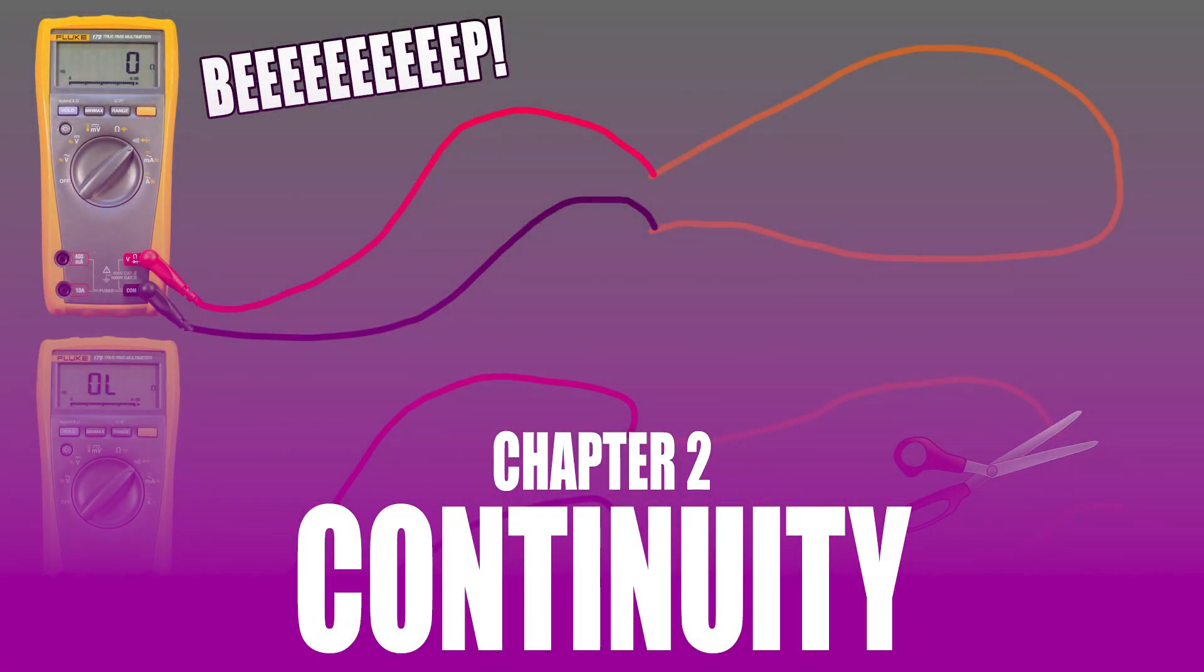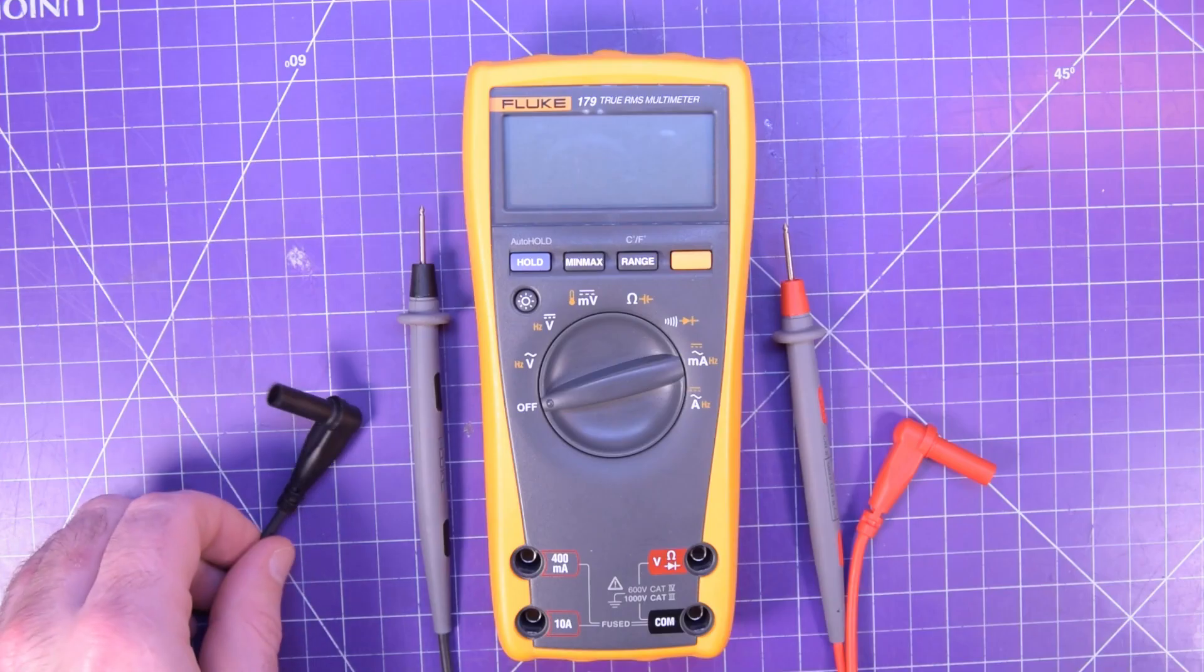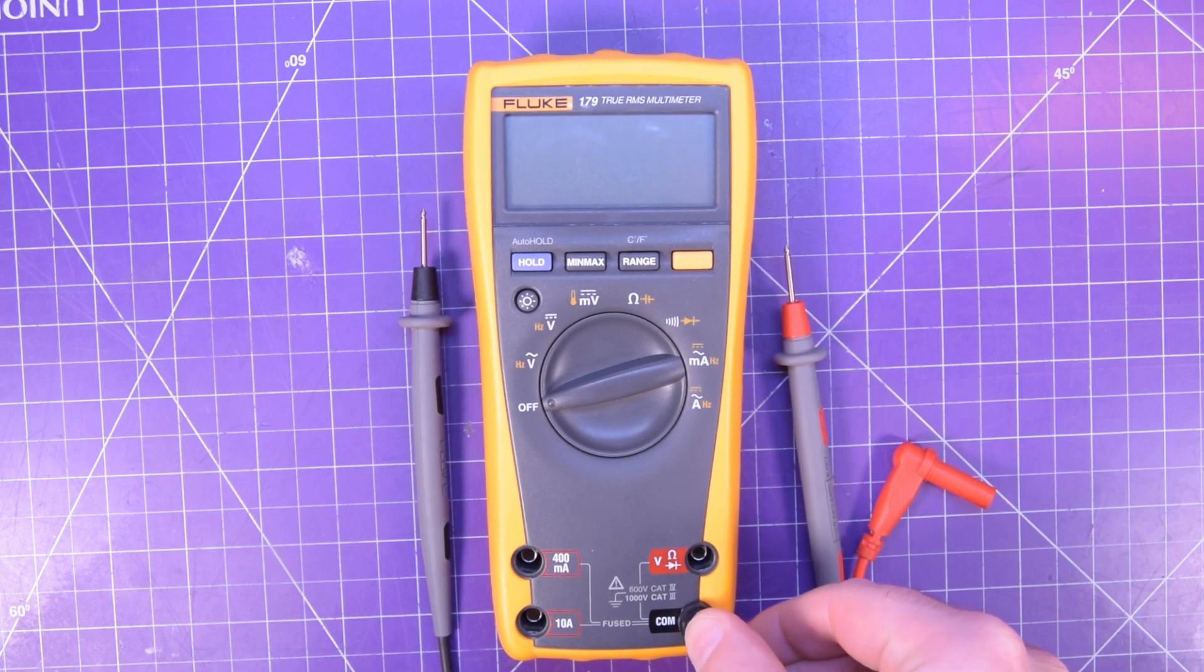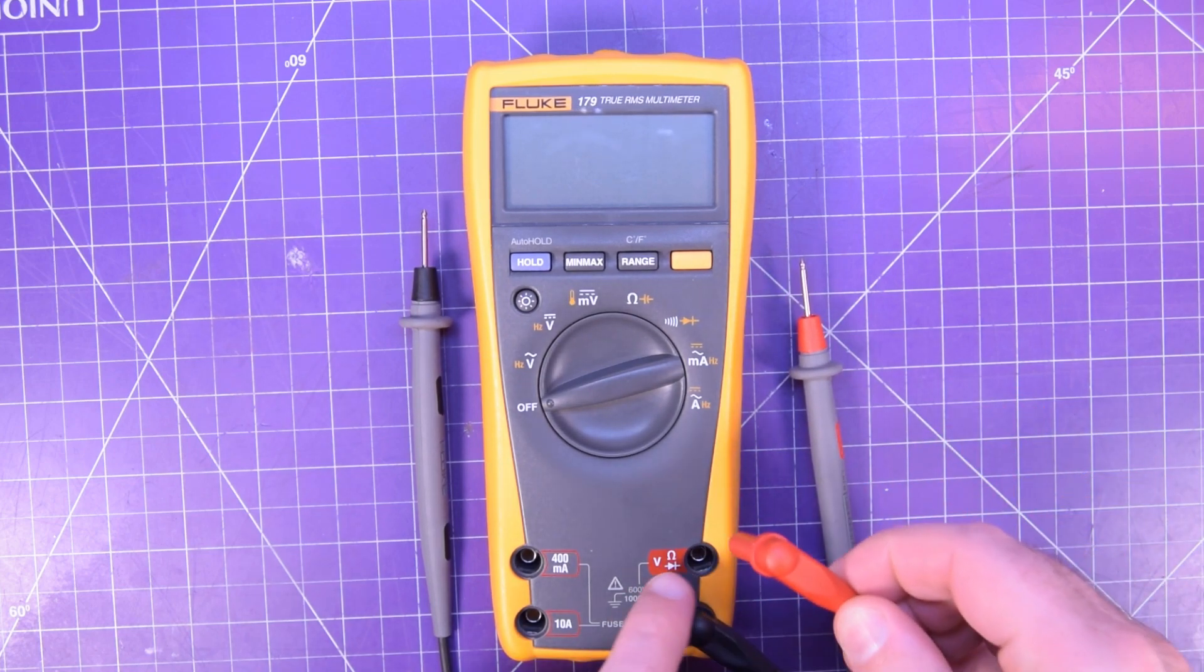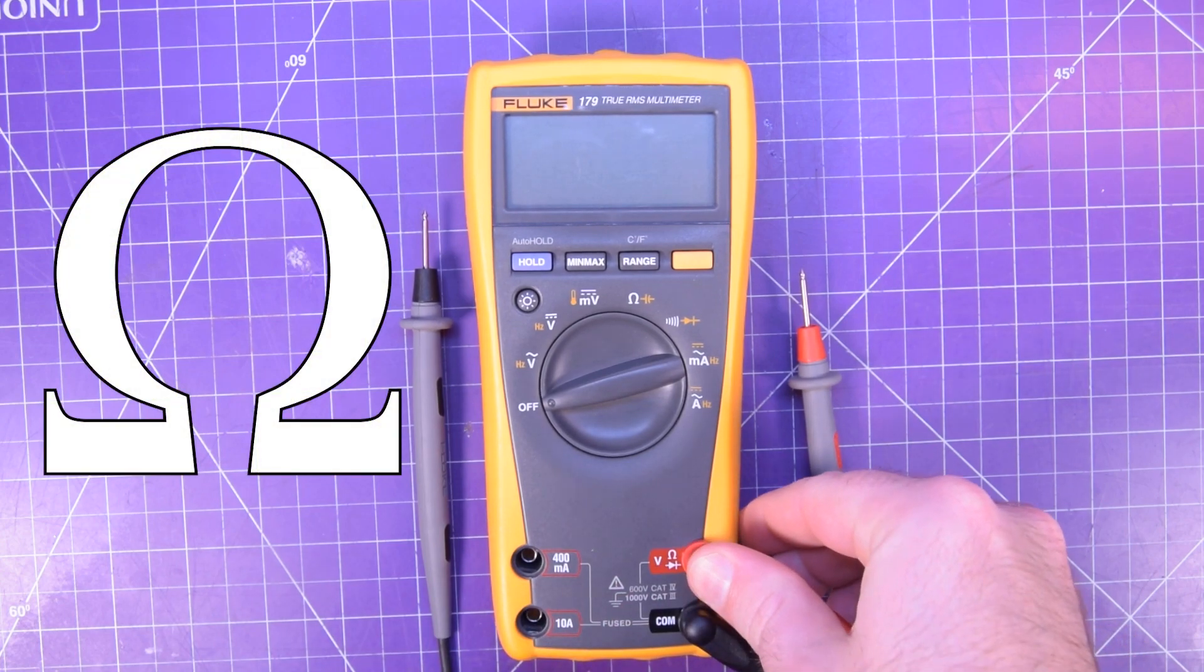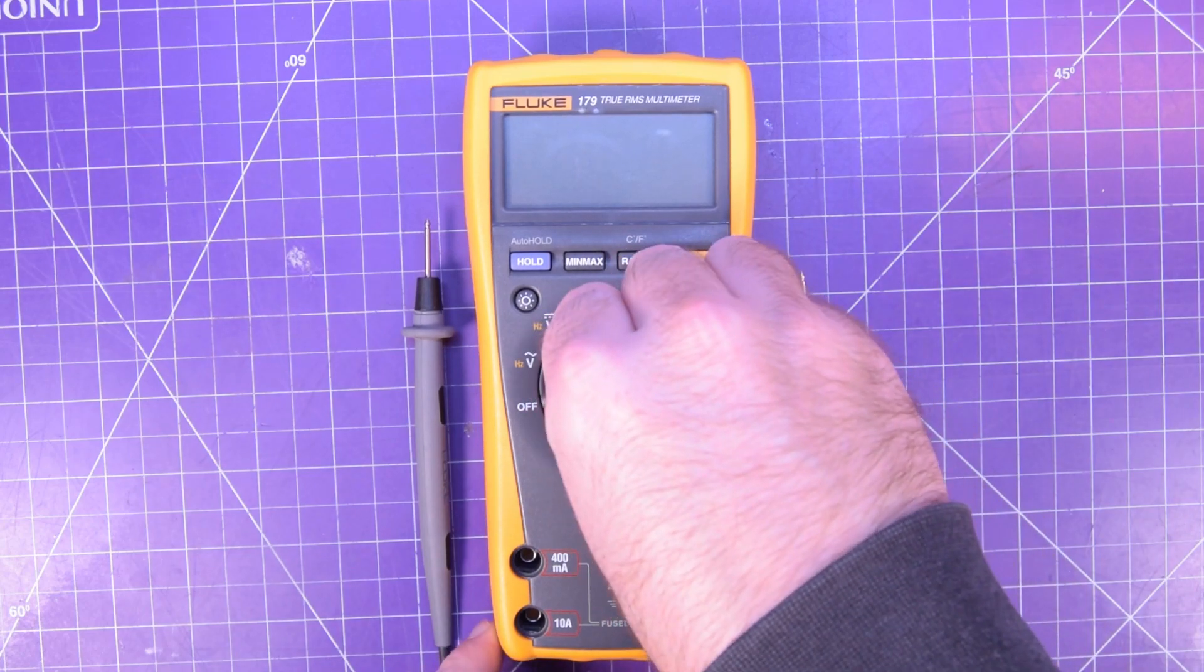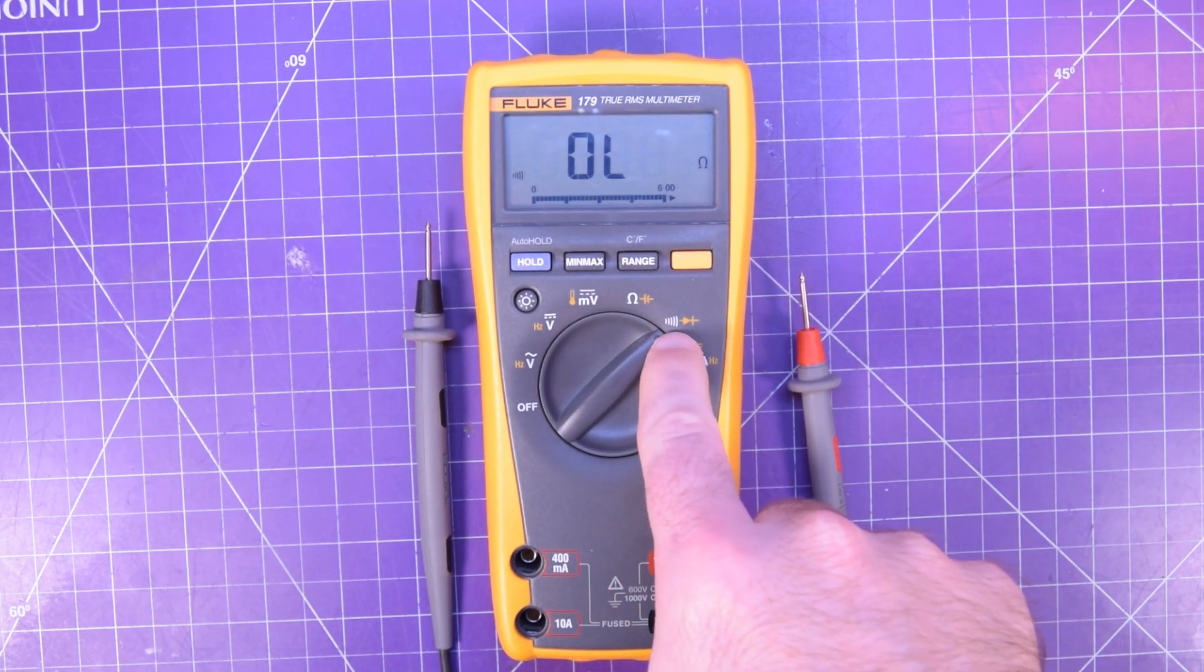One of the most useful functions of a multimeter is the continuity setting. It tells you if a conductor, a circuit, or multiple parts of a circuit are connected to each other. It basically tells you if the conductor you have connected to the red probe is electrically connected to the conductor you have connected to the black probe. First, put your black lead into the black jack labeled COM. Next, put the red lead in the red multifunction jack labeled with the Greek letter omega. Omega is the symbol we use to represent ohms. Then turn the range switch to the continuity function, which looks like a sideways Wi-Fi symbol.